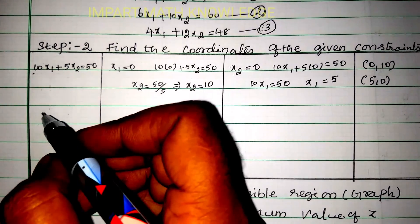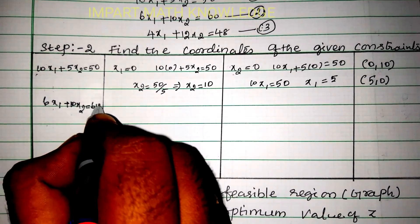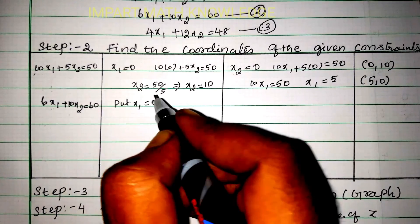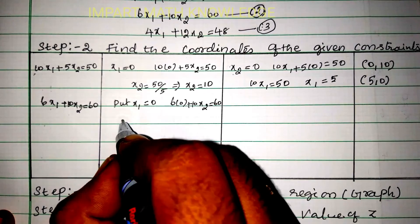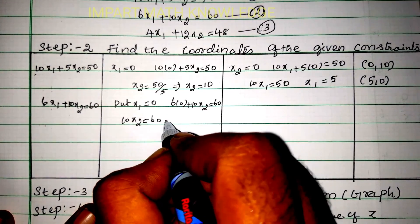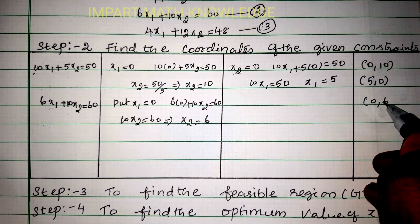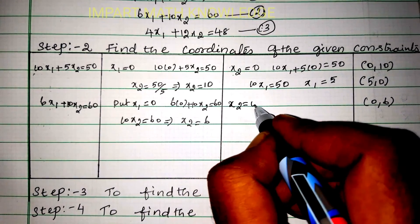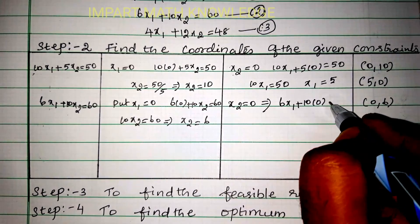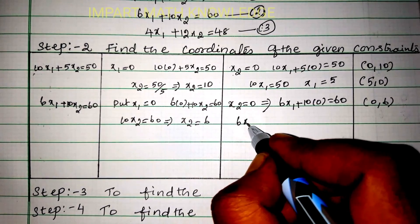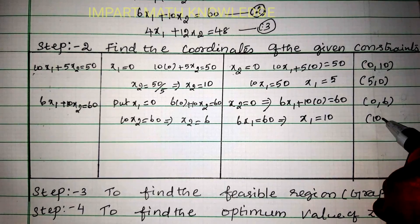For the second constraint 6x1 + 10x2 = 60: putting x1 = 0 gives 10x2 = 60, so x2 = 6, giving coordinate (0, 6). Putting x2 = 0 gives 6x1 = 60, so x1 = 10, giving coordinate (10, 0).